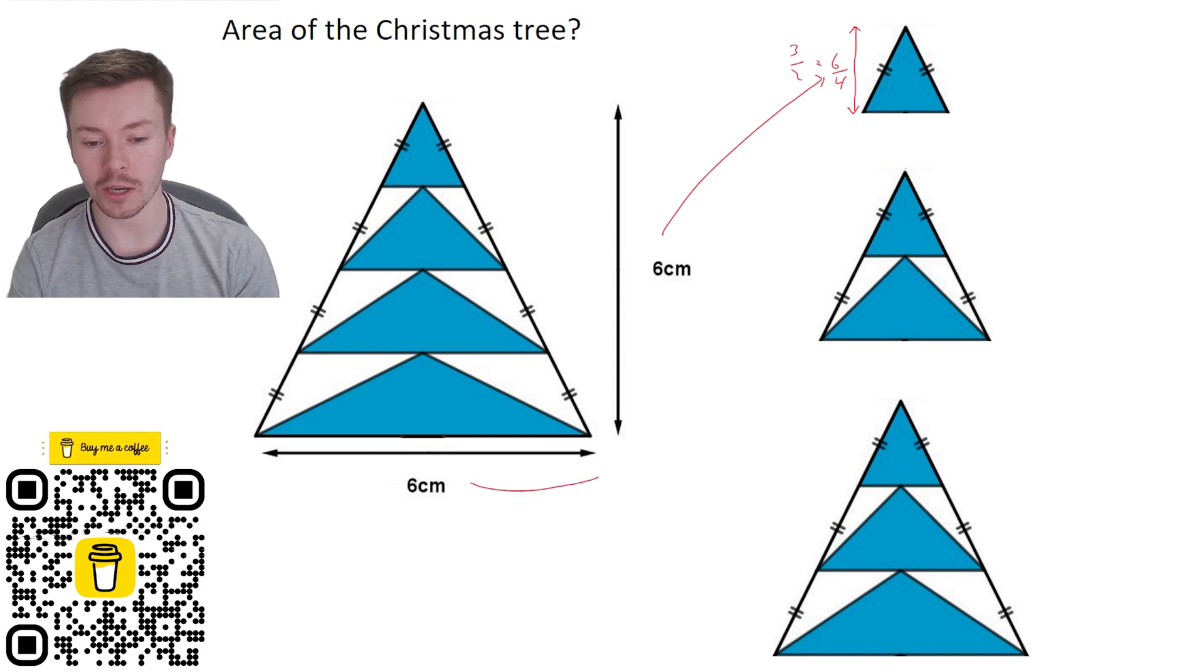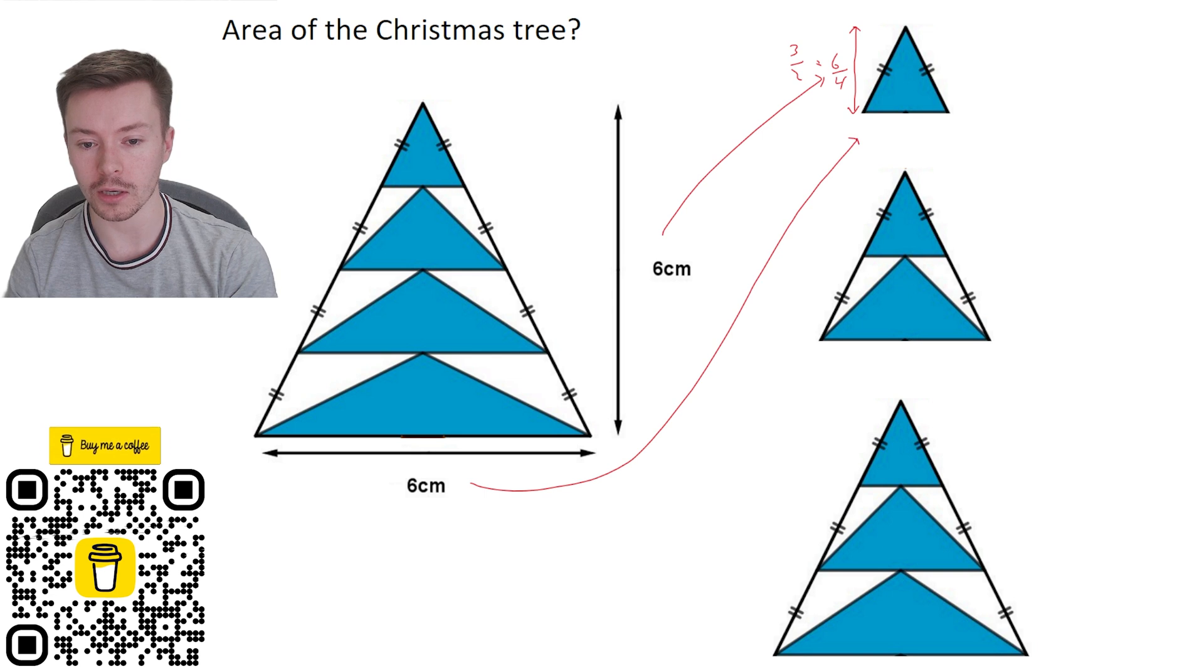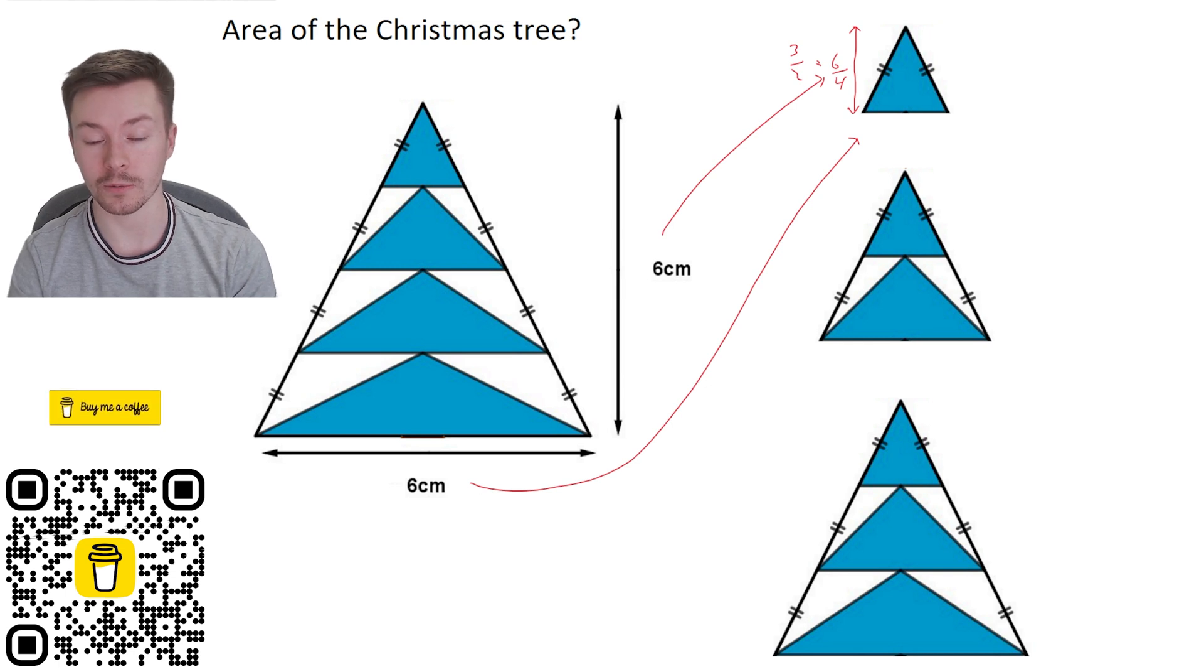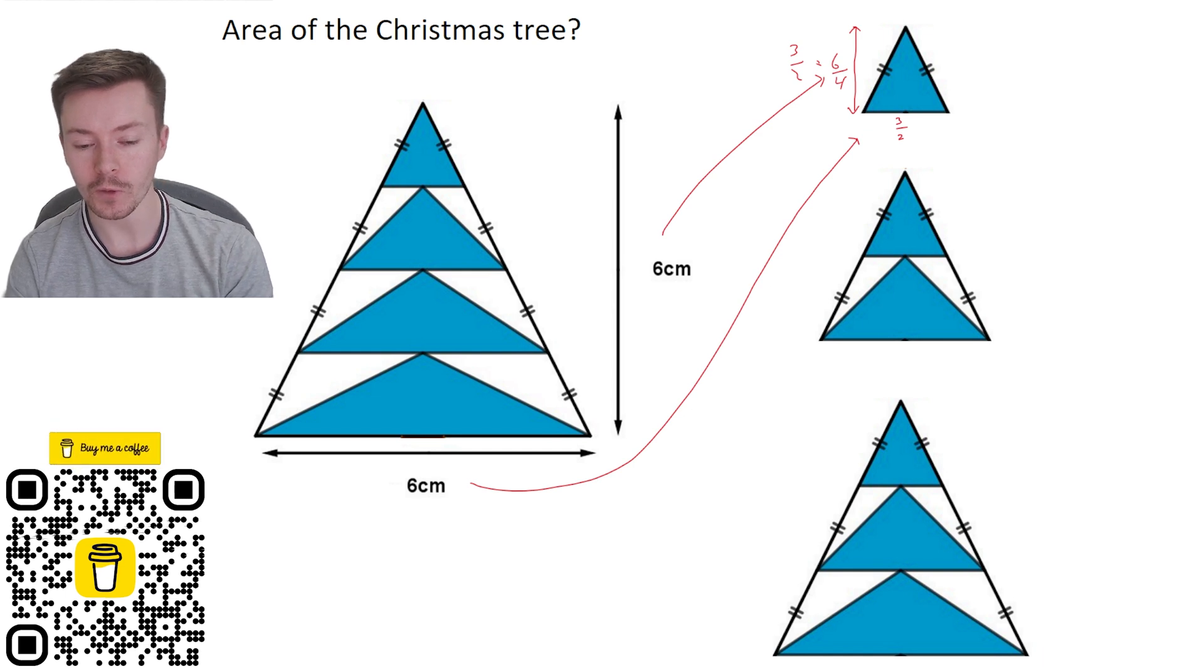Now I can do exactly the same with the bottom here. So that again, because the scale factor for this top part is a quarter, it's going to be a quarter of six. So that would also be three over two. Now remember to work out the area of the triangle, I need the base times the height and half it.